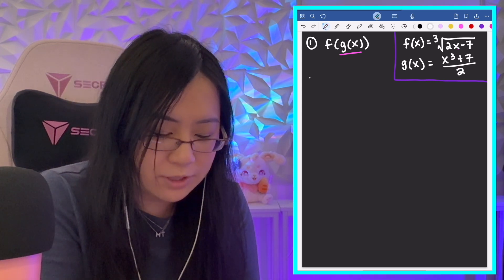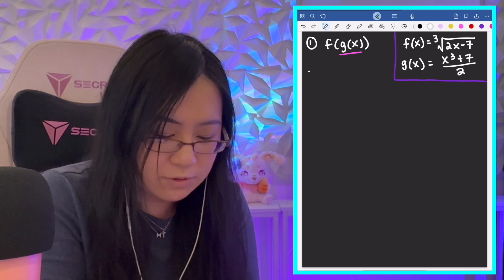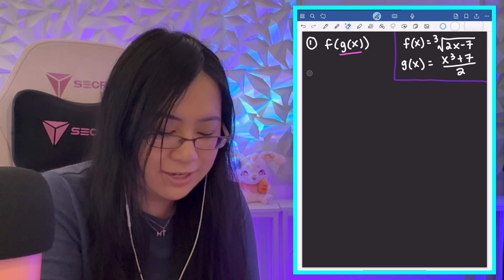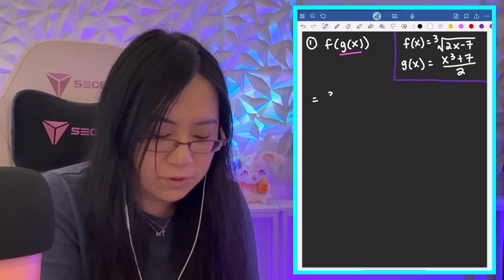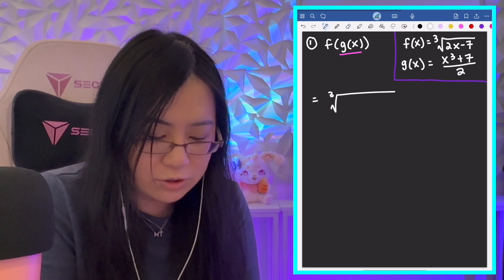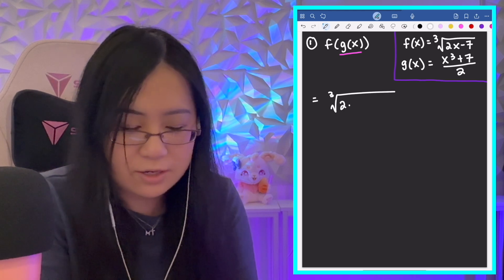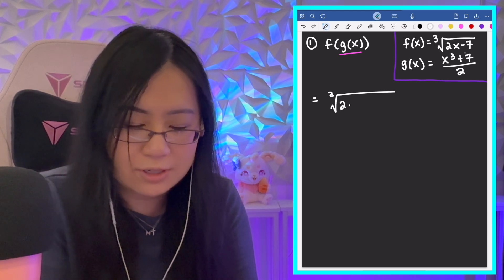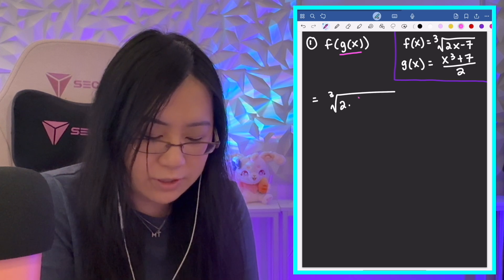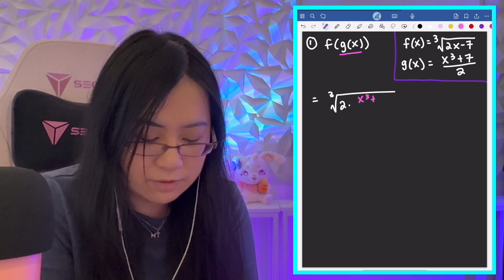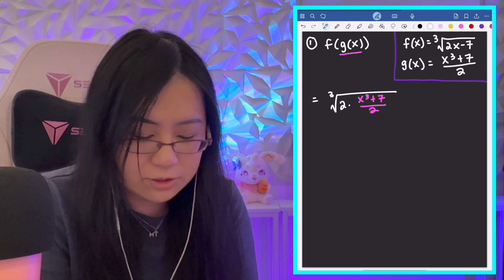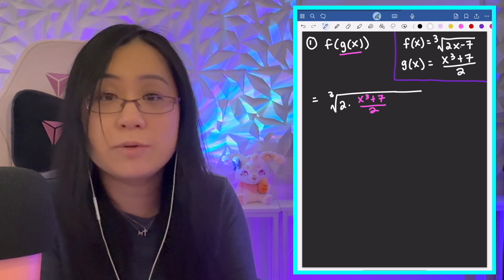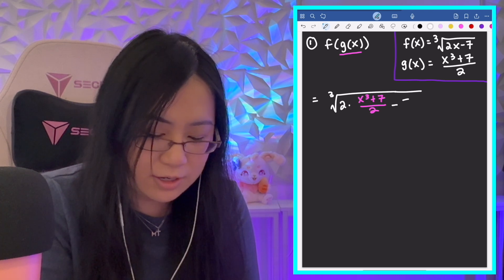So, I'll just write this all out. I have the cube root. This equals the cube root of 2 times, and then g(x), so this entire thing. So, x cubed plus 7 over 2. And then that's the 2g(x) part minus 7.